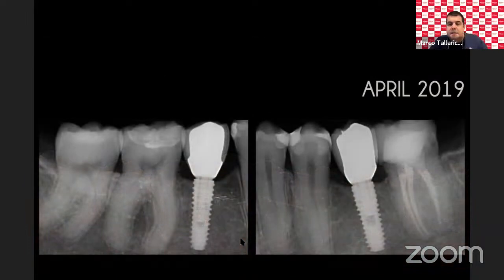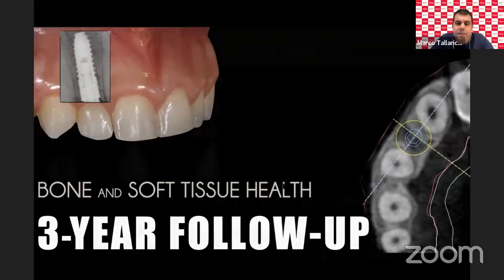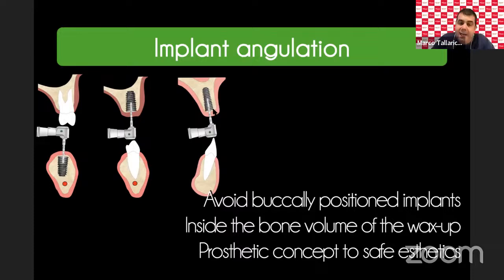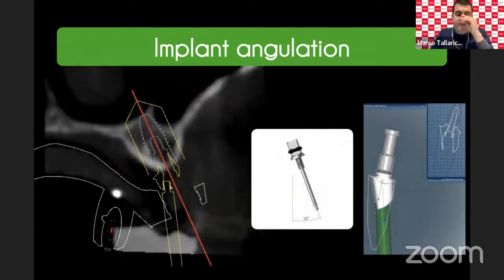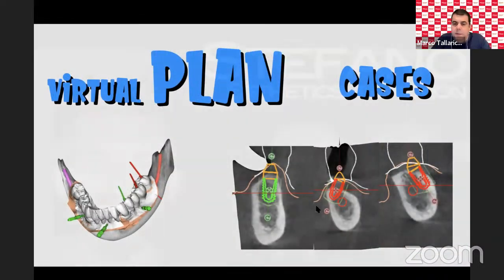Labio-palatal position is similar to mesiodistal: at least 1.5 mm of buccal and palatal bone, for aesthetics and to support soft tissues. I recommend GBR to improve bone in deficient cases. In the aesthetic area this is also an aesthetic consideration, and it prevents exposure of the implant neck under horizontal forces, which can lead to implant fracture. We need 1.5–2 mm of bone in the labio-palatal direction. Inclination is important to avoid buccally positioned implants. Keep the screw hole palatally to allow screw-retained restorations. Angle drivers can correct up to 20 degrees of angulation.